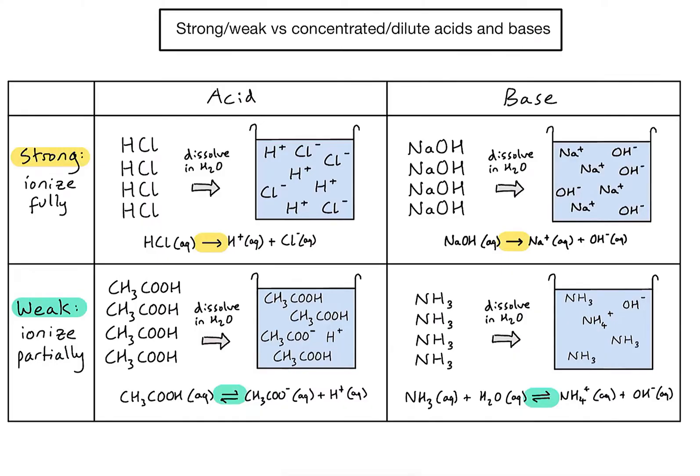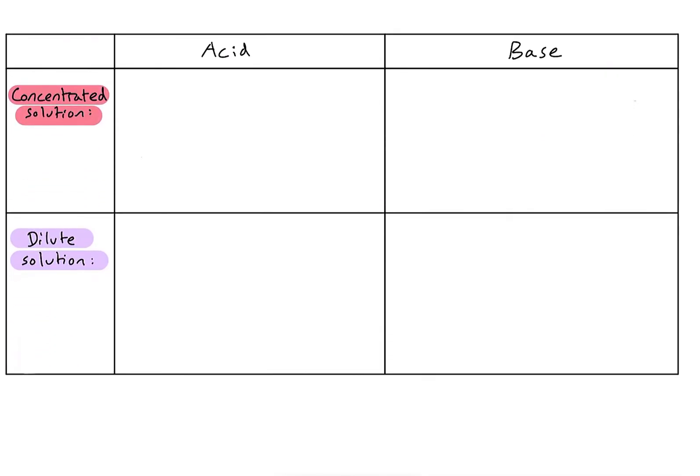Let's now look at concentrated and dilute acids and bases using the same format. A concentrated solution of an acid or base simply means that we've got lots of our reagent — it could be an acid or a base — per unit volume of solution.